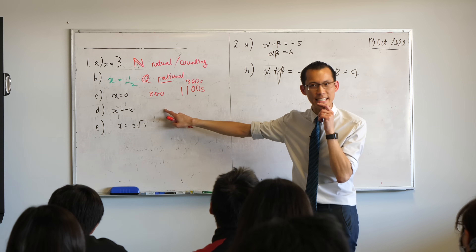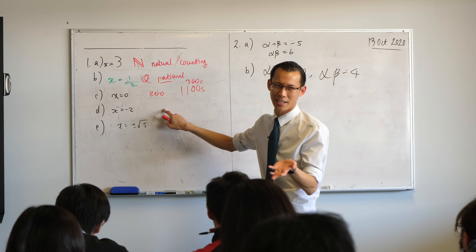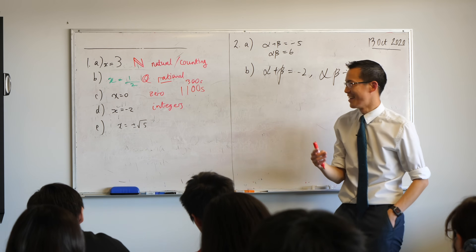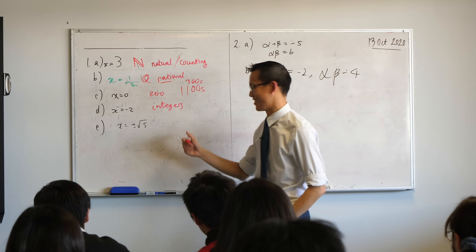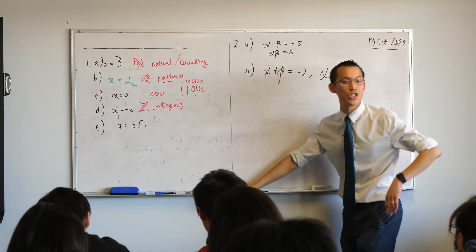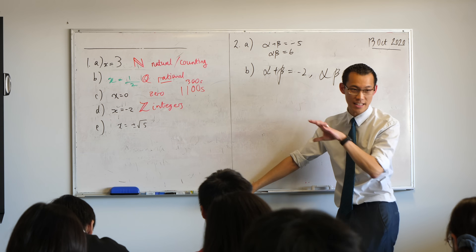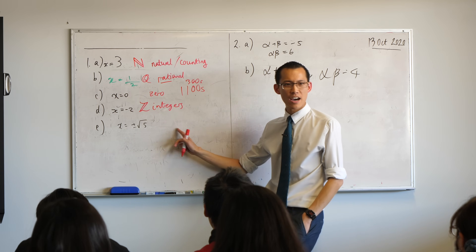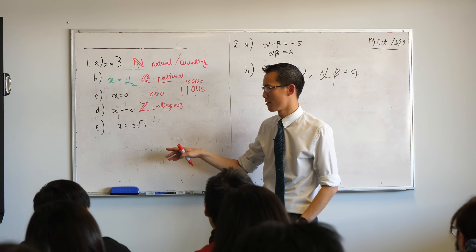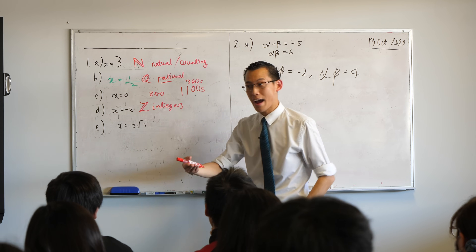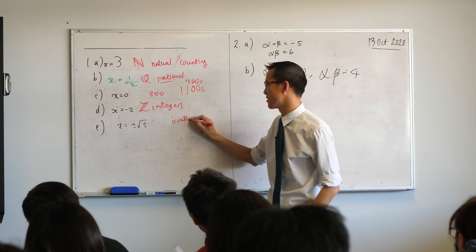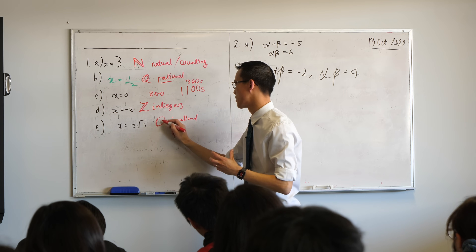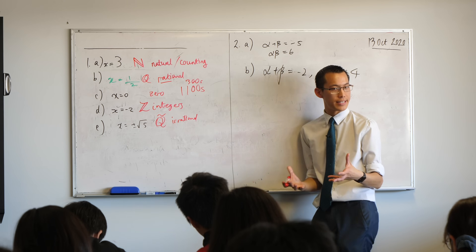Then we come down to these guys — back in Year 7 we called these directed numbers, but they have a more technical name starting with an I. These are the integers. Because we want to mess with you, the symbol for integers is not an I — it's a Z, again with those two lines. It's a reference to the German mathematicians — 'Zahl', Z-A-H-L, is German for counting or counter. And then this last one down here doesn't belong to any of these sets. We call it irrational — it's a name that means not one of these. We take the symbol Q and pop a tilde over the top, which means not in the set of rational numbers.